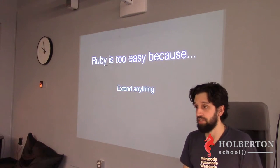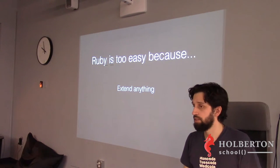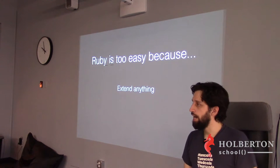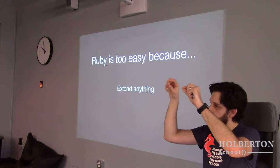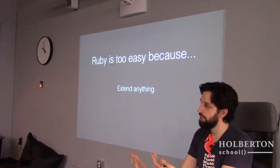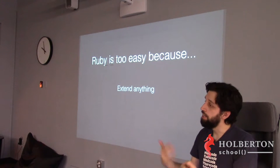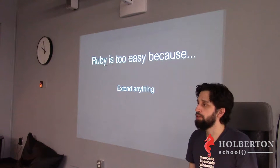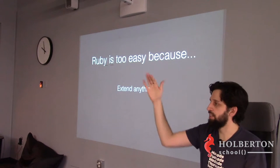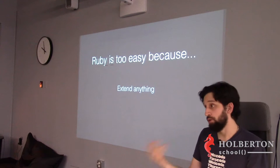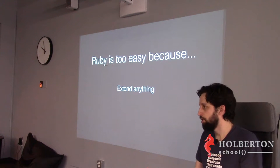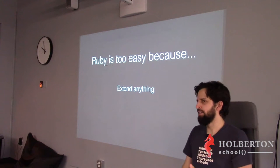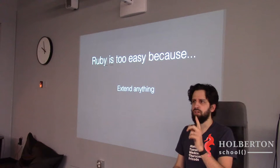Why did you have to write `class String`? Because I needed to tell Ruby: 'in the String class, there's this function too.' I didn't define String from scratch — I reopened it. You can do this in C++ as well — reopen a class that already exists and add stuff to it. You can also do it in Go with structs. It's not very common in Python.